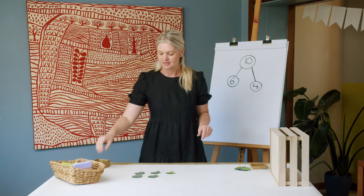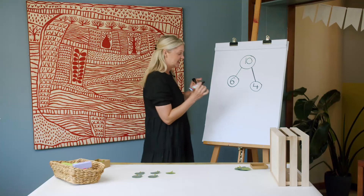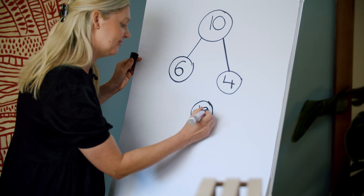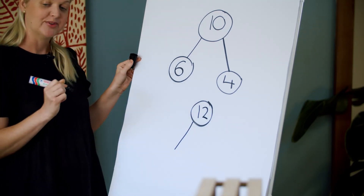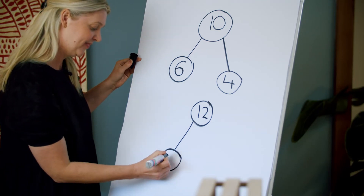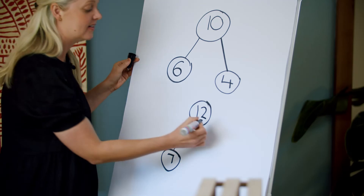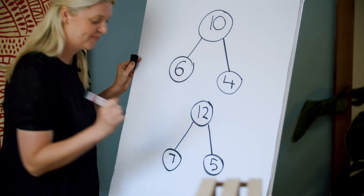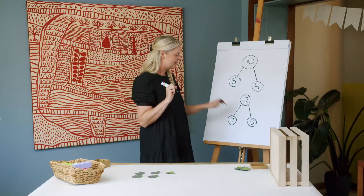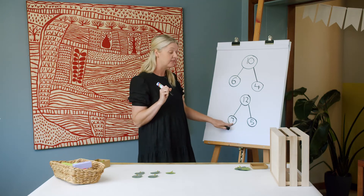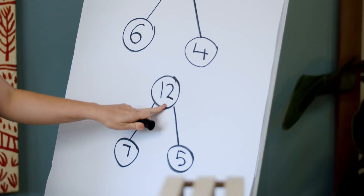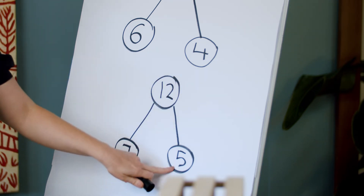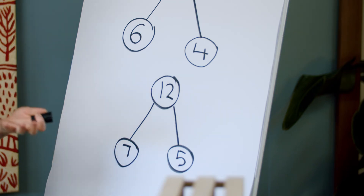Let's record this. Our starting collection was 12, we removed seven and discovered that there were five left. Remember, five and seven makes 12. And if we started with 12 and removed seven, there is five. Do you see how they are relating?